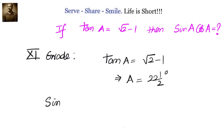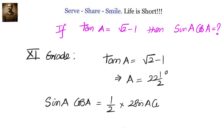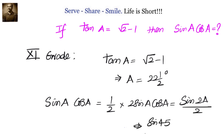What we need to calculate is sin A into cos A. So how can we write sin A cos A in terms of 45 degrees? That is half into sin 2A. Then we know the value of sin 45. So half into 2 sin A cos A is nothing but sin 2A divided by 2. If A is 22.5, then 2A is 45, so sin 45 divided by 2, which equals 1 by 2 root 2.